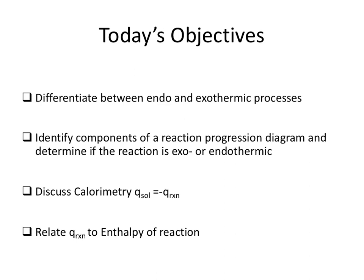After watching this video lecture, students are going to be able to differentiate between endothermic and exothermic processes. You'll be able to identify the components of a reaction progression diagram and determine if the reaction is endo or exothermic. We'll discuss calorimetry and how to use information from a calorimeter to calculate information about reactions. Lastly, we'll relate the heat of reaction to the enthalpy of reaction.